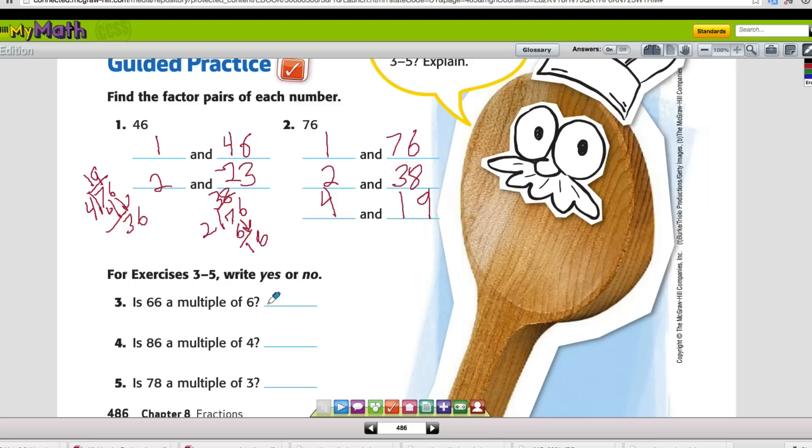On these, we just need to write yes or no. Is 66 a multiple of 6? Well, this goes back to our 11 times tables. 6 times 11 is 66. So we know that yes, this is a multiple of 6.